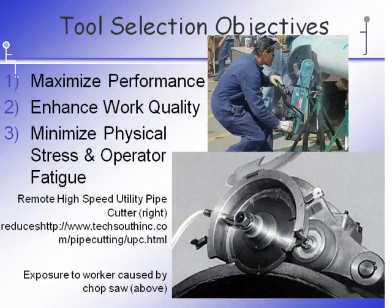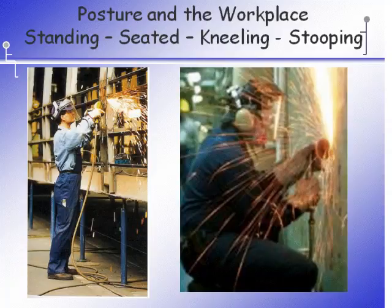The operation was extremely physically tiring; the chop saw is heavy, in the 15-pound category. The solution put into place was a remote high-speed utility pipe cutter shown in the black and white picture. After making a small cut in the pipe, whether plastic or cement, you drop the cutting blade into place, wrap a chain around the outside circumference of the pipe, and then turn the saw on to somewhat remotely cut the pipe. This eliminates the worker's exposure to awkward postures as well as vibration.